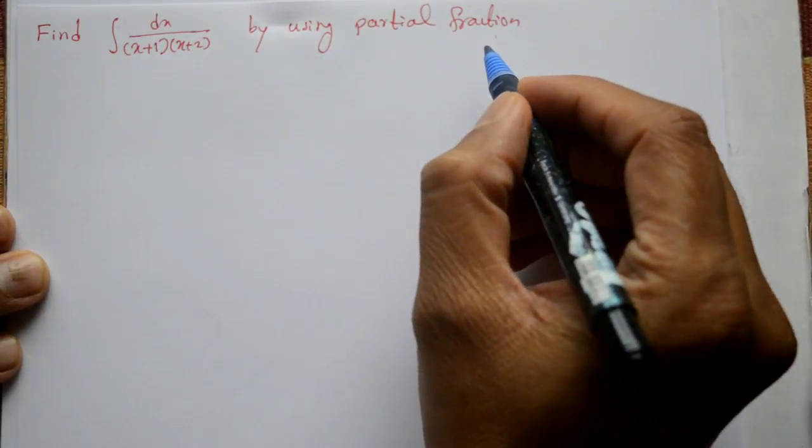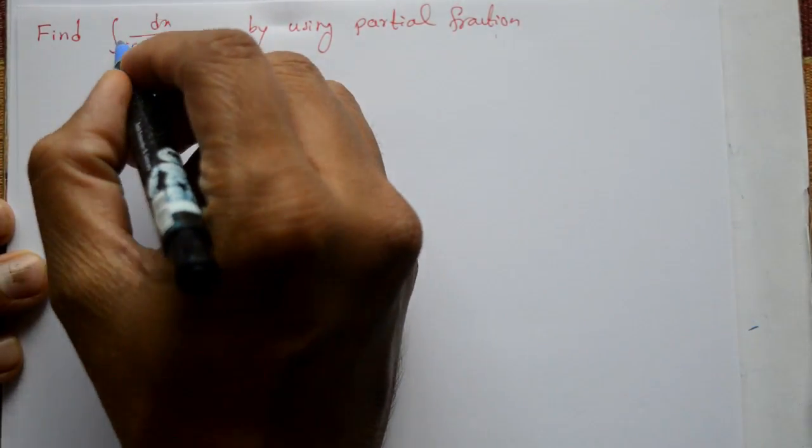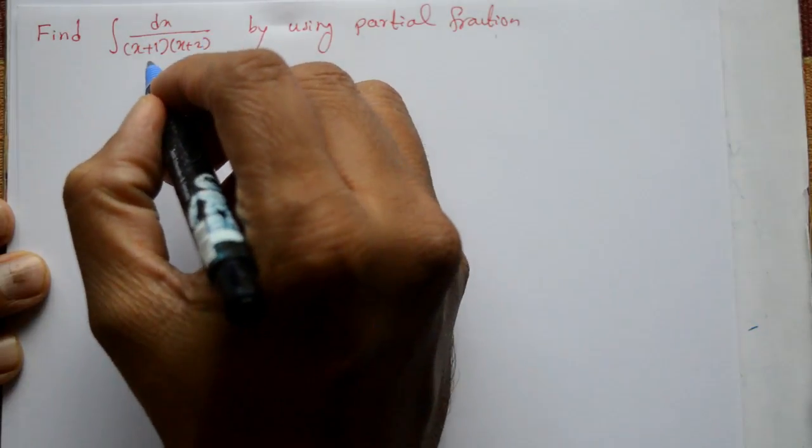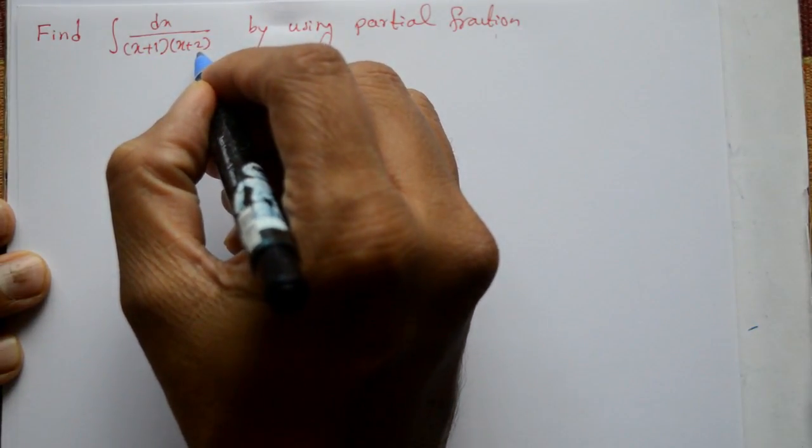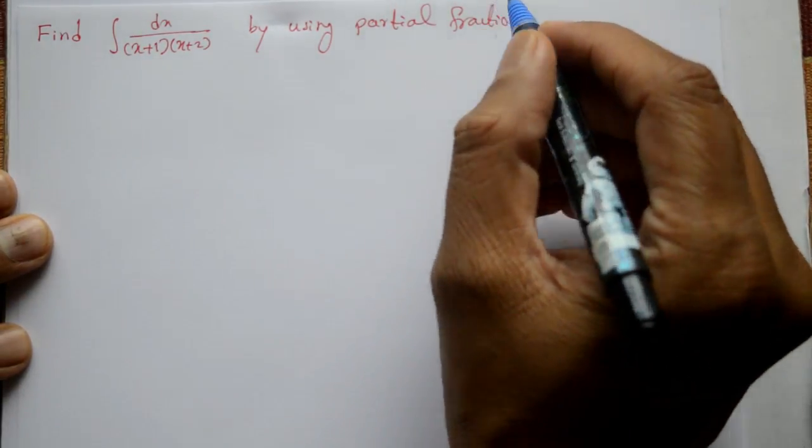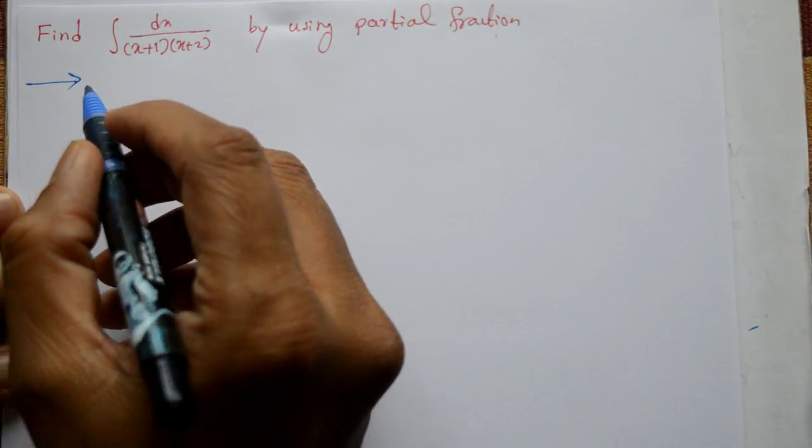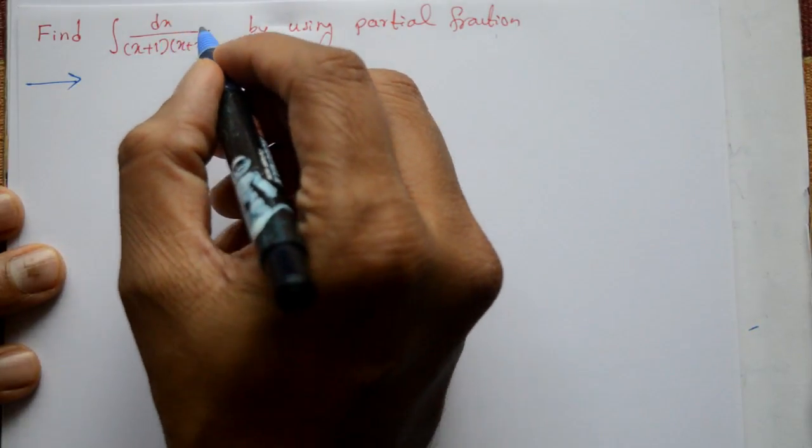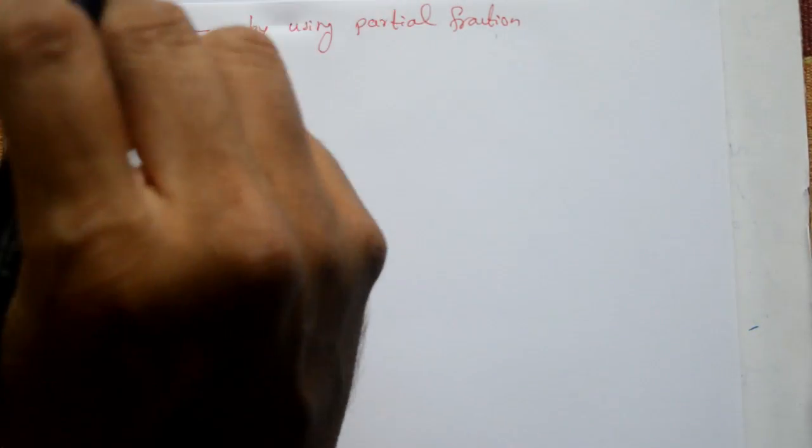Welcome students. This problem ko solve kareenge. Find integration of dx divided by (x+1) into (x+2) by using partial fraction. Now, solution part. See, it is proper or improper, first check karena hai.